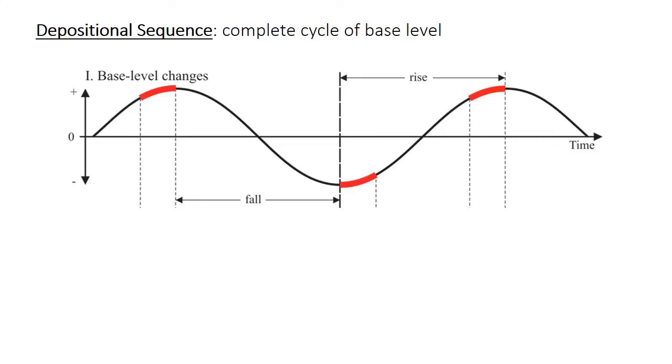The term sequence stratigraphy gets its name from the concept of a depositional sequence, which is a complete cycle of base level, in this case from 0 up to the peak, down to the trough, and then back to 0 again. This diagram actually shows 1.5 base level cycles, if you go from the left all the way over to the right-hand side. Also note that this is just a schematic diagram. Base level cycles in the real world don't have to be symmetrical like this or regular. The fall can be shorter than the rise, or vice versa. They don't have to have the same amount of rise and fall.